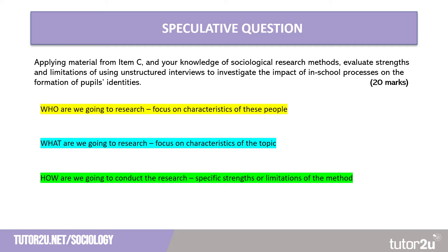Highlighted in blue is what we are going to research — we need to focus on the characteristics of the topic, which is pupil identities. What is specific about pupil identities that might cause us some issues when doing the research, and how might those issues be addressed by the specific method? Highlighted in green is how we are going to conduct the research, looking for specific strengths or limitations of unstructured interviews — features unique to unstructured interviews.